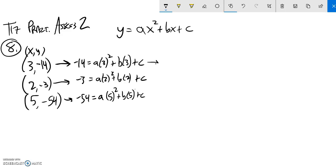So that means I can write these equations. It turns out 3 squared is 9. So it's 9a plus 3b plus c equals negative 14. 2 squared is 4, so 4a plus 2b plus c is negative 3. And then the third one, 5 squared is 25. 25a plus 5b plus c equals negative 54.